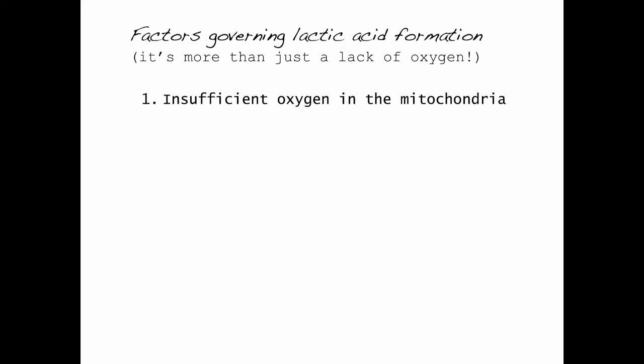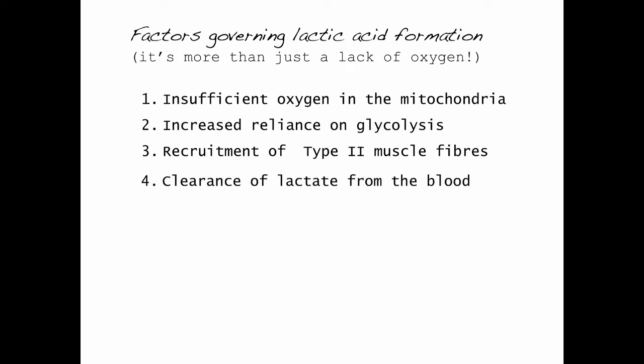Number one, sometimes there is insufficient oxygen in the mitochondria. Number two, there's an increased reliance on glycolysis. Number three, when we recruit more type two muscle fibers. And number four, which we covered in the fourth video in this series, is the clearance of lactate from the blood.